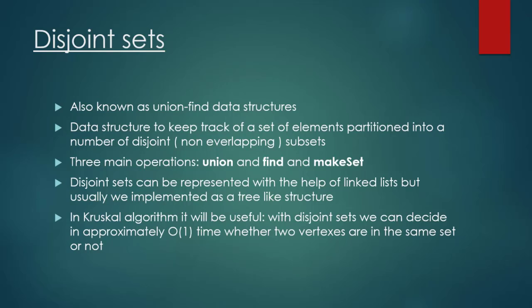This data structure supports three main operations: the union, the find, and the make set operations. Disjoint sets can be represented with the help of linked lists, but usually we implement it with the help of a tree-like structure.